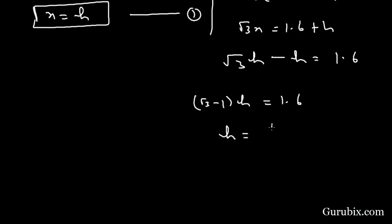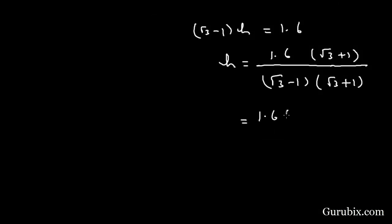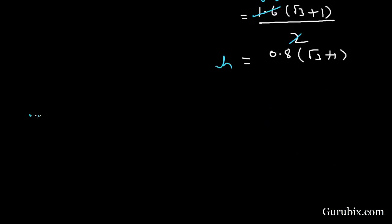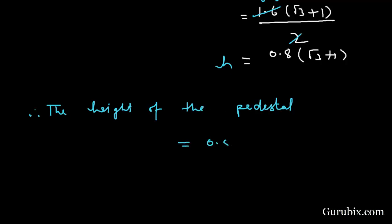Taking H common, we get H(√3 − 1) = 1.6, therefore H = 1.6 / (√3 − 1). Rationalizing this, we multiply by (√3 + 1)/(√3 + 1), giving H = 1.6(√3 + 1) / 2, which simplifies to H = 0.8(√3 + 1). Therefore the height of the pedestal equals 0.8(√3 + 1) meters. This is the solution of the question. Thank you.